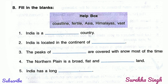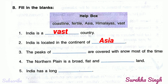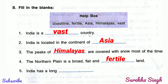Next, Question B: Fill in the blanks. 1. India is a vast country. 2. India is located in the continent of Asia. 3. The peaks of the Himalayas are covered with snow most of the time. 4. The northern plain is a broad, flat and fertile land. 5. India has a long coastline.